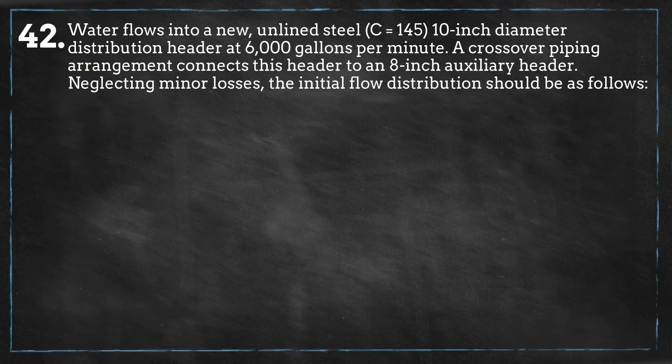Water flows into a new unlined steel 10-inch diameter distribution header at 6,000 gallons per minute. A crossover piping arrangement connects this header to an 8-inch auxiliary header. Neglecting minor losses, the initial flow distribution should be as follows.